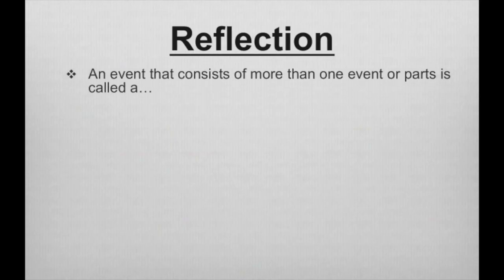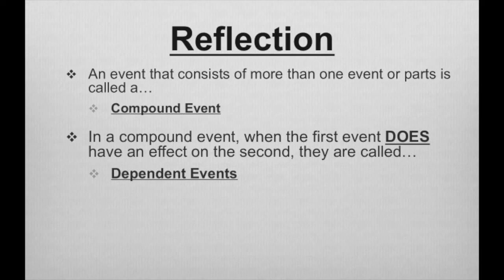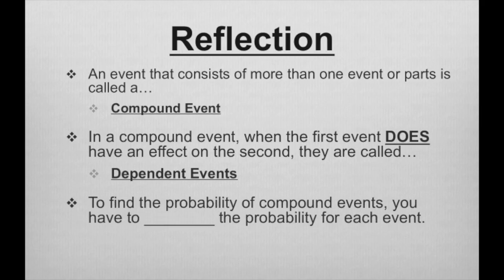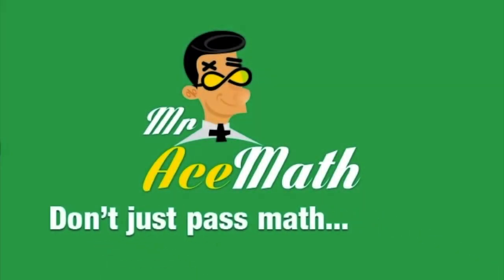Let's review. An event that consists of more than one event or parts is called a compound event. In a compound event, when the first event does have an effect on the second, they are called dependent events. This is very different from independent events where the first has no effect on the second, such as flipping a coin. To find the probability of compound events, you multiply the probability for each event. Thanks for using Mr. Ace Math — don't just pass math, ace it.